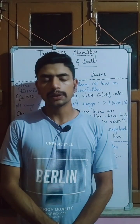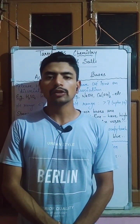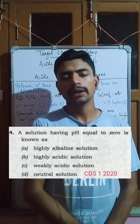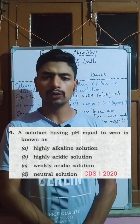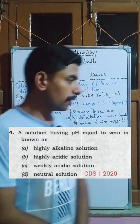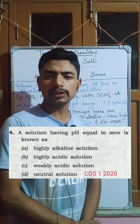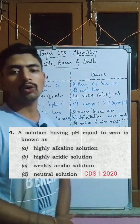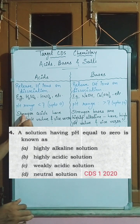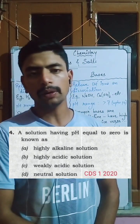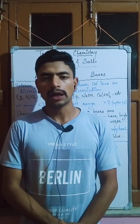Now let's move to the first question, CDS1 2020. The question asks: a solution having pH nearly equal to zero will be what? We have learned that stronger acids have a very low pH value, close to zero. This means such a solution will be highly acidic in nature. Therefore, option B is the correct answer.